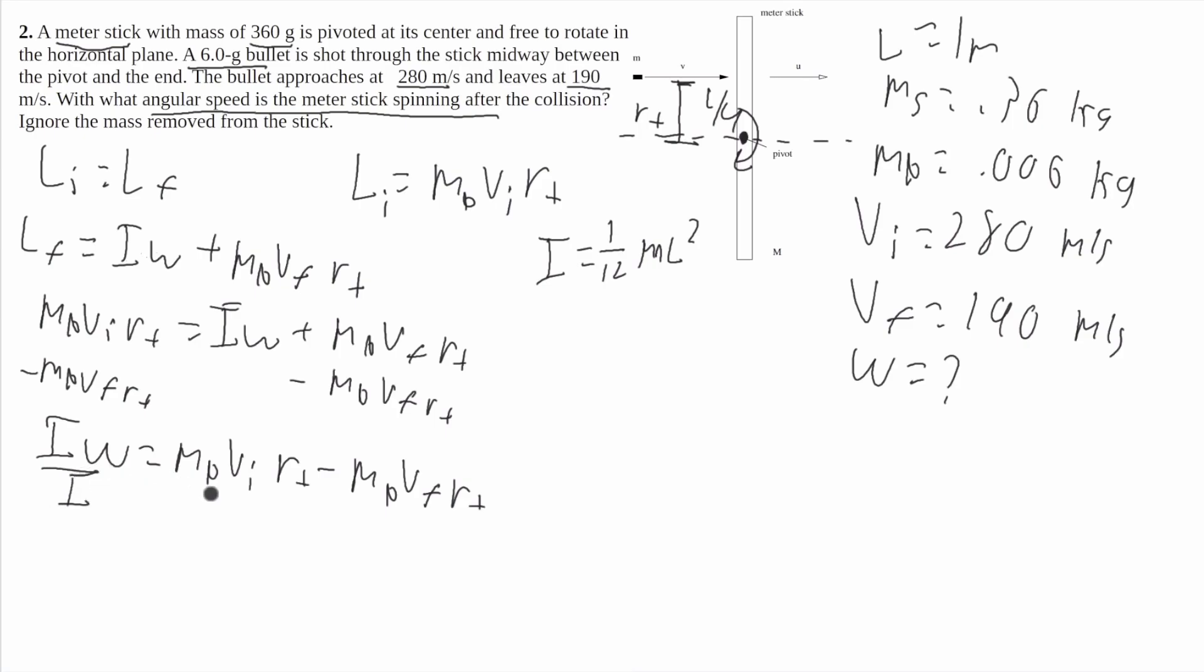I'm going to divide out this i to both sides, and we'll get omega is equal to mb v i r perpendicular minus mb v final r perpendicular all over i. Now we said that r perpendicular was l over 4. So now I'm going to substitute those to there, and we'll get mb times l over 4. I got this l over 4 from factoring out this r perpendicular, and then substituting this l over 4 there. So it'll be times v initial minus v final.